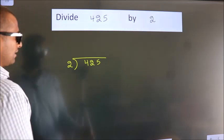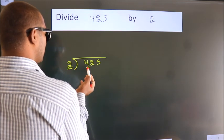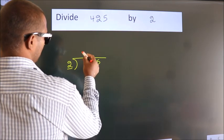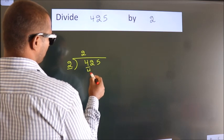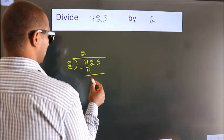Next. Here we have 4, here 2. When do we get 4? In 2 table, 2 2s, 4. Now we should subtract, we get 0.